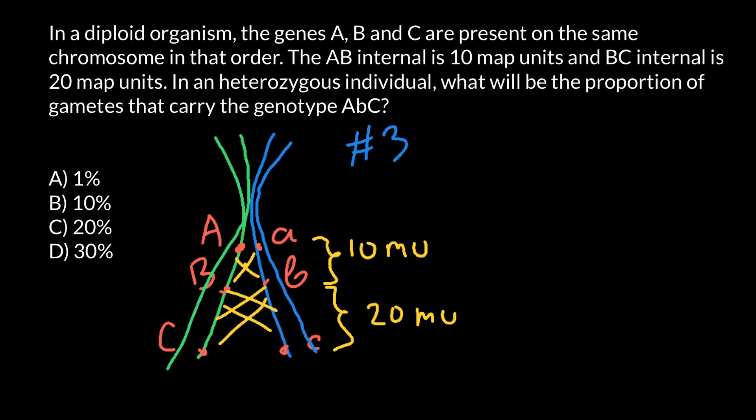And now we can answer the question. Basically, frequency of the crossing over between genes A and B happens with a frequency of 10%, so 0.1. And frequency of crossing over between genes B and C happens with a frequency of 0.2. So what is the probability that we would have two crossing overs, one here and another one here?